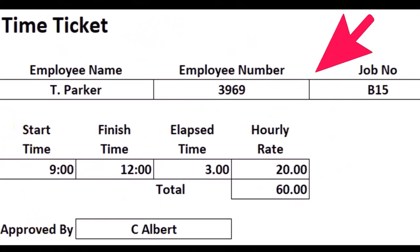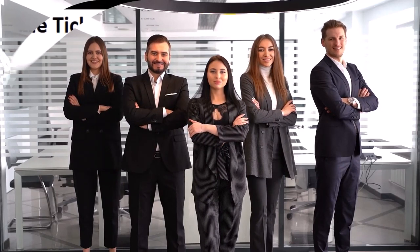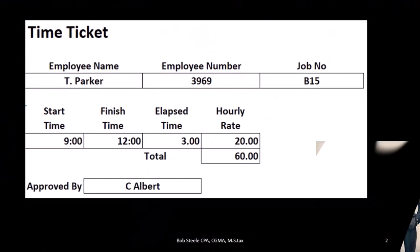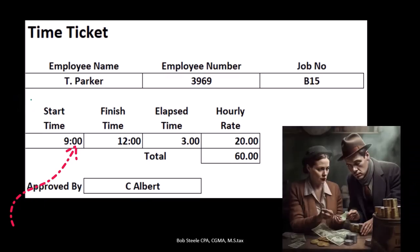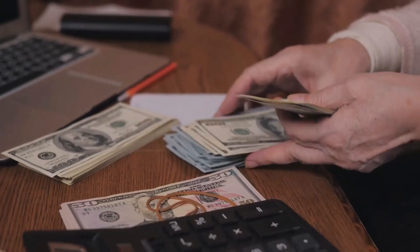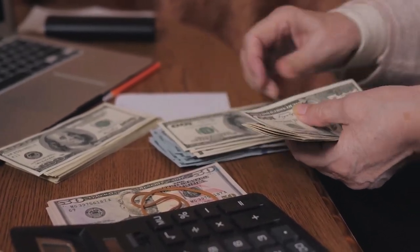When we consider the time ticket, any employee that works on the job — we're ultimately going to take their wages that we pay them, which we usually record as wages expense, but apply it not to an expense but to the job, to work in process. We're tracking the time and applying that time not to an expense in the period we paid the employee, but to an asset — inventory — not expensing it until we sell the inventory in the form of cost of goods sold.